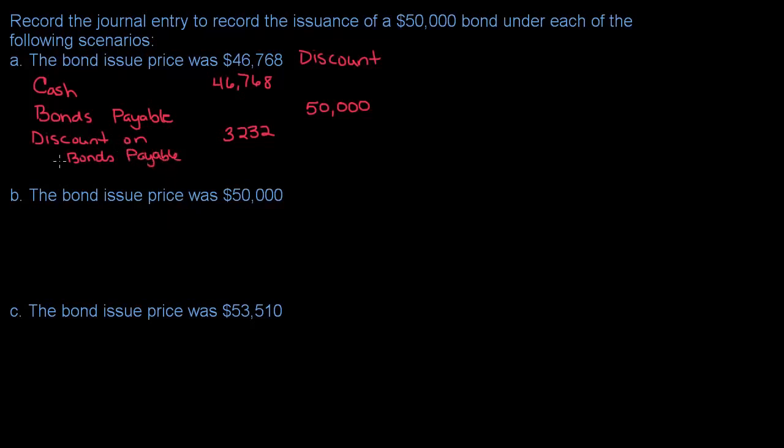And that discount on bonds payable is actually a contra account to the bonds payable account. So that's the first one. Now how about the second one? The second one, we have a bond issued at $50,000. The face value is $50,000, so this is par.